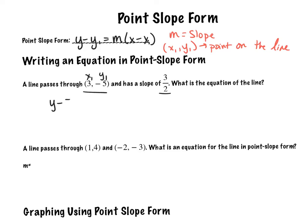so y minus y1, so y minus negative 5 is equal to m 3 halves times x minus x1. And then so when I look at this, I might accept this answer, but if you're looking at multiple choice, you need to simplify this a little bit. So if I subtract a negative, I really take that as if I'm adding. So I'd say y plus 5 equals 3 halves times x minus 3, and there is my equation.